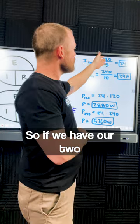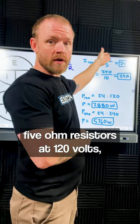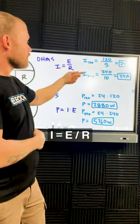So if we have our two 5 ohm resistors at 120 volts, we get 24 amps. I equals E over R.